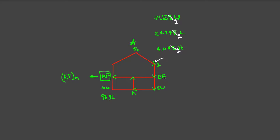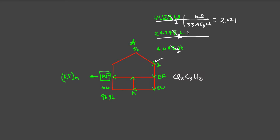To convert grams to empirical formula units, we need to convert grams to moles. We know our empirical formula is going to contain chlorine, carbon, and hydrogen. There are 35.45 grams of chlorine per mole, 12 grams of carbon per mole, and 1.008 grams of hydrogen per mole.